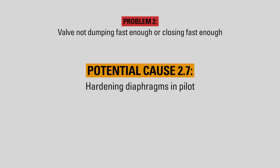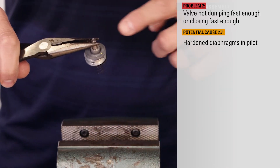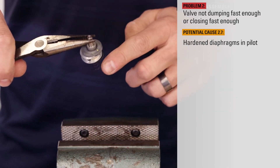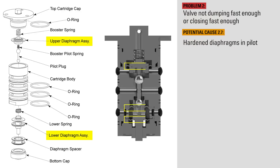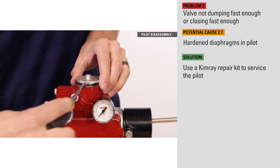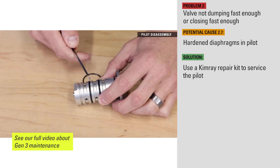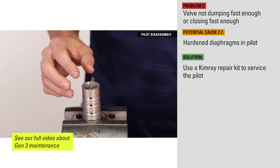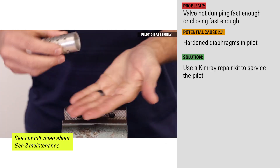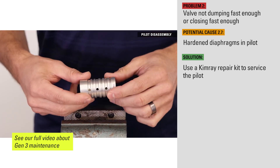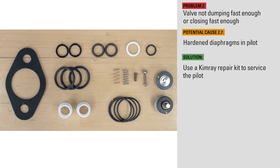If the controller has been in service for a long time without the elastomers being replaced, the diaphragms in the pilot may have stiffened to the point that they won't fully flex. If you suspect this is the case, remove the pilot from the controller, disassemble, and replace all the elastomers. Kimray offers full repair kits containing all soft components that should be replaced at regular service intervals.